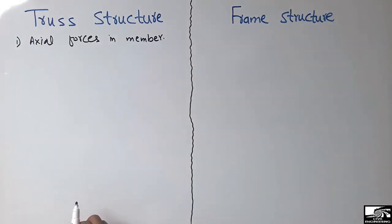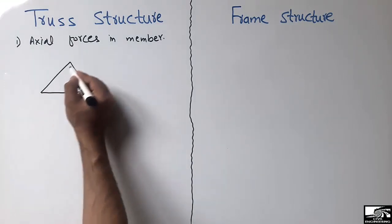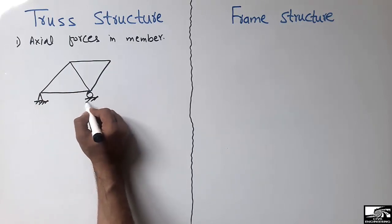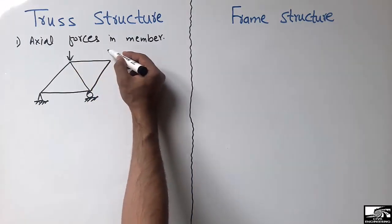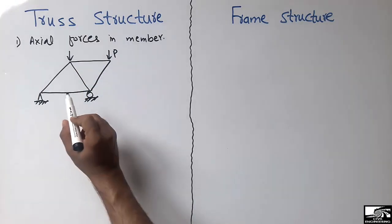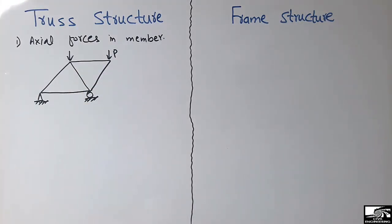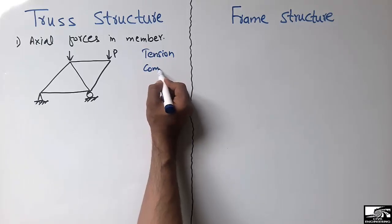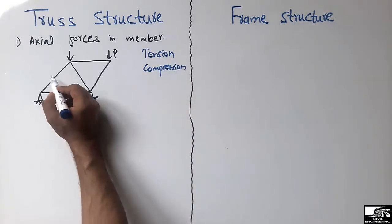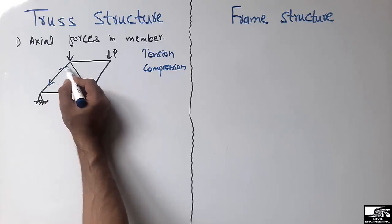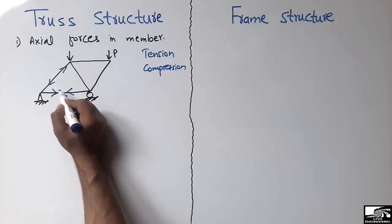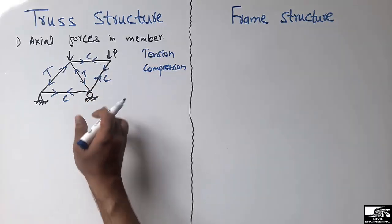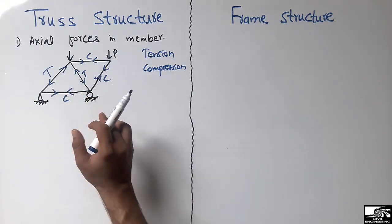For example, consider a triangular type of truss with a hinge and roller support. When a load P is applied on the truss, the members will only be subjected to tension or compression. There are only axial forces — tension or compression — in each member. There is no bending moment or shear force in the member.